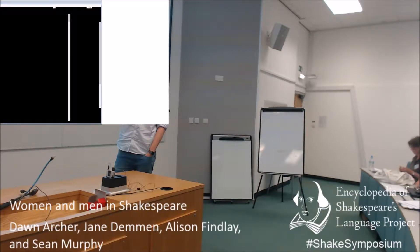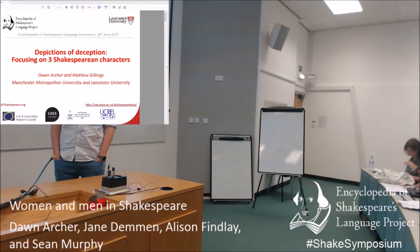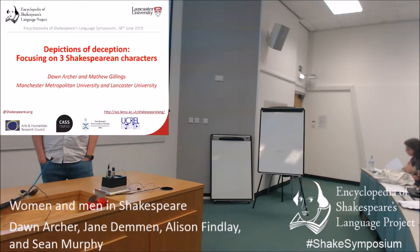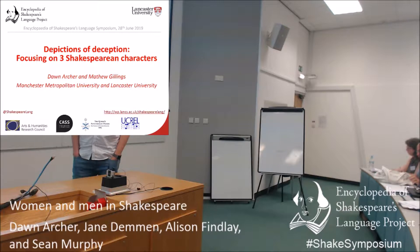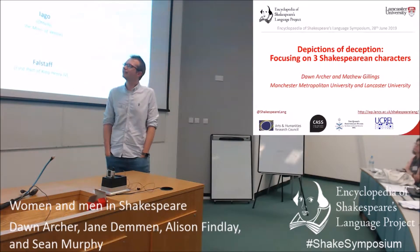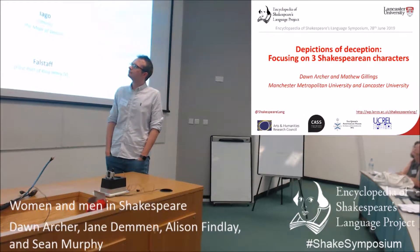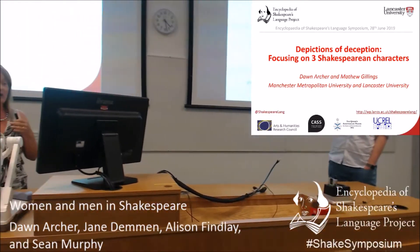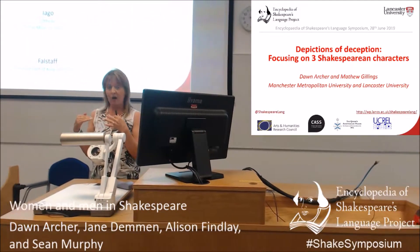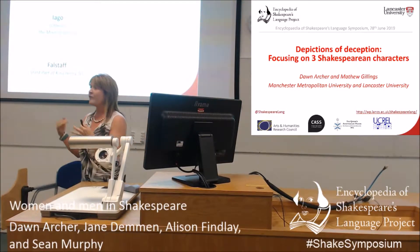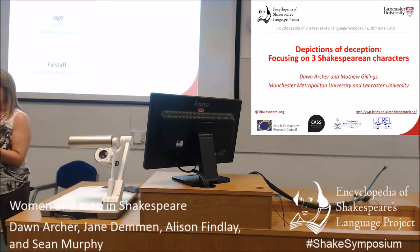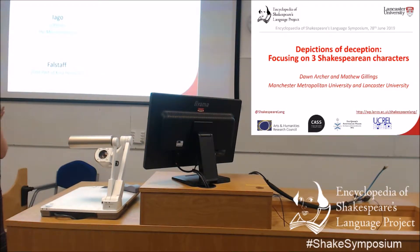We can't go through all five Shakespearean characters we're paying attention to as our larger project, which you'll be pleased to know. So we're going to focus on those three: Aaron from Titus, Iago from Othello, and Falstaff just from the first part of Henry IV. Obviously he's in the second part and in The Merry Wives, but we're looking at him in one particular play. That's something we can explore later.